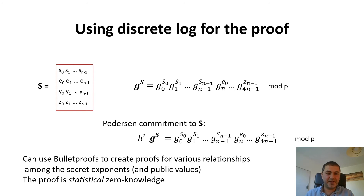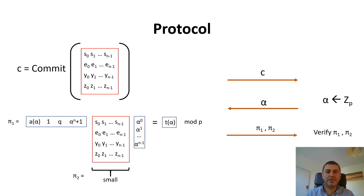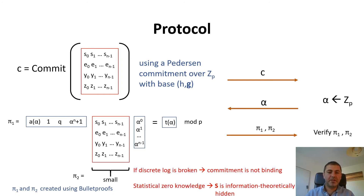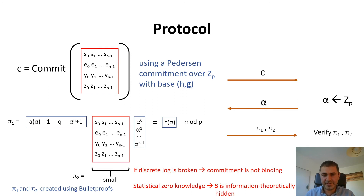Even if somebody can break discrete log, they can fake Pedersen commitments but cannot recover what was in them, because the commitment is information-theoretically hiding. So privacy is information-theoretic. Of course, if somebody can break discrete log, they can forge a proof — the commitment would not be binding. To make it quantum annoying, we can have the verifier send a random H and G (via a random seed like SHAKE) for which the prover must use for the Pedersen commitment. This ensures there's no trapdoor planted. The prover cannot pre-compute by solving discrete log once for fixed H and G, because H and G change with every proof.